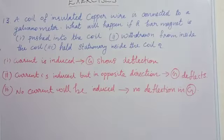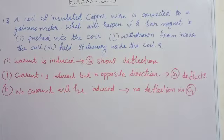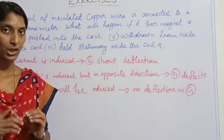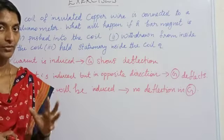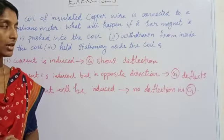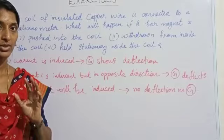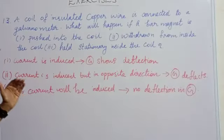Second case: when the bar magnet is withdrawn from inside the coil. At that time, current will be induced but the direction of current will be in the opposite direction. At the same time, the galvanometer shows a deflection in the opposite direction.